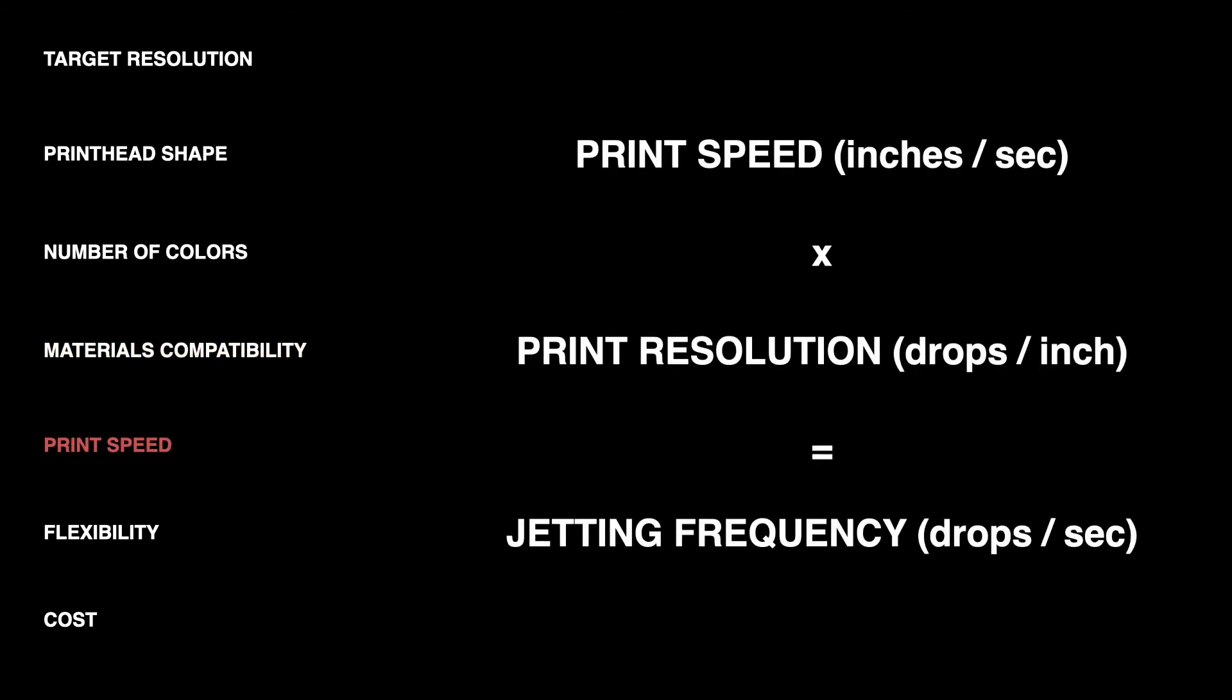The speed at which you're trying to print is also important for determining the printheads because some printheads can handle higher frequencies of jetting than others. To determine the frequency that you need, you take the print speed and multiply it by the print resolution and that will tell you the jetting frequency that you need in terms of the number of drops per second coming out of each nozzle. Most industrial inkjet printheads are somewhere between 20,000 and 100,000 drops per second out of each nozzle.